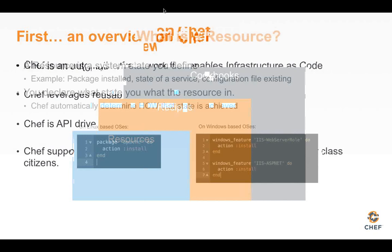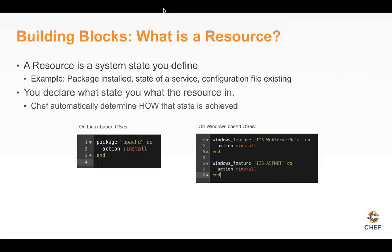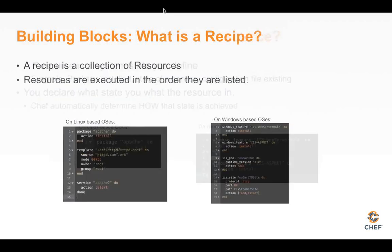Starting from the bottom up, let's talk about resources, recipes, and cookbooks. A resource is an action of some sort — it could be a package you have to install, a service you have to enable, or a directory that needs to be present. Chef comes with 150 built-in resources. You say what you want to do with that resource — whether something should be installed or removed, or a user should be present or deleted. These are all things you do through recipes.